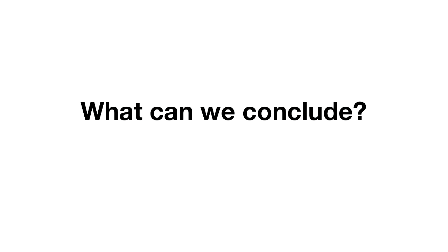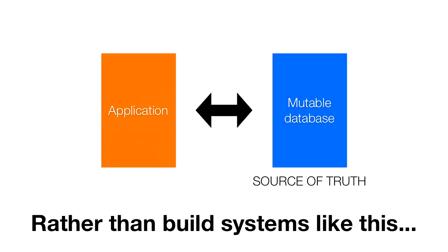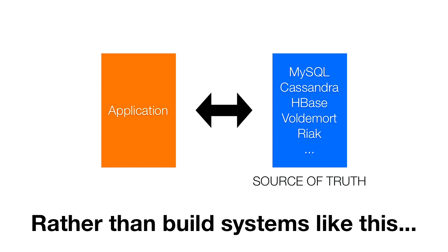So what can we conclude from this? How can we use this to do a better job of architecting our data systems? One conclusion is that your source of truth in any data system should always be an immutable data store. Looking at the way people build systems, this is what it usually looks like: your source of truth is a mutable database, and your application does reads and writes into that mutable database. This has been standard practice with relational databases for decades, and people have continued this as they've adopted NoSQL solutions.